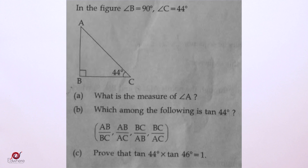In the figure, angle B is equal to 90 degrees and angle C is equal to 44 degrees. What is the measure of angle A? Which among the following is tan 44? And prove that tan 44 degrees into tan 46 degrees is equal to 1.